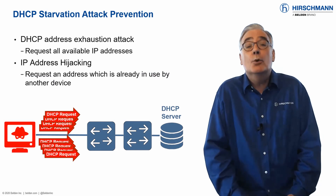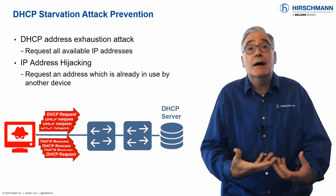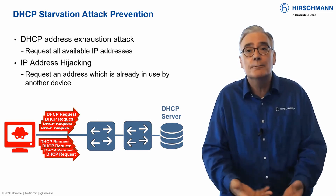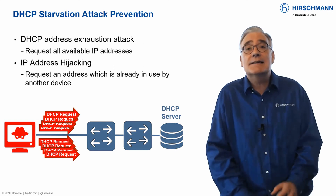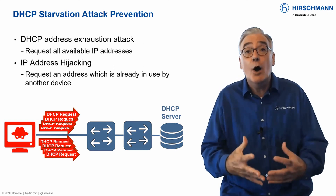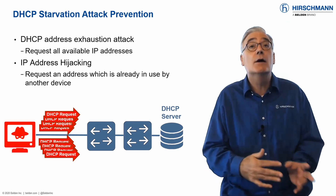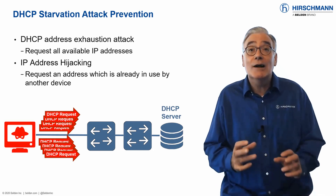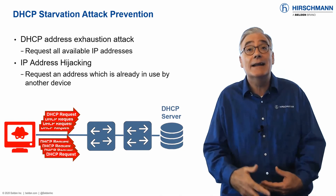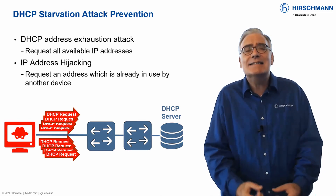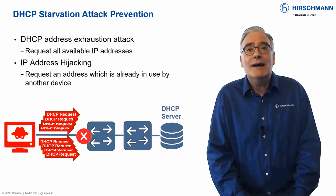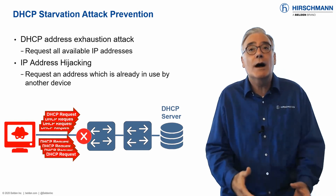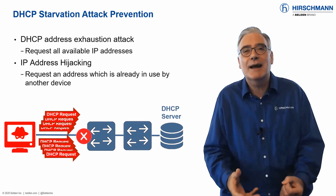DHCP servers have a pool of IP addresses, and end devices are issued addresses from this pool. A simple denial of service attack involves the attacker requesting all the available IP addresses from the DHCP server. As a result, no addresses are available for genuine end users. This is known as a starvation attack. Mitigating these attacks is not easy, but switches have the tools you require to block this malicious behavior.